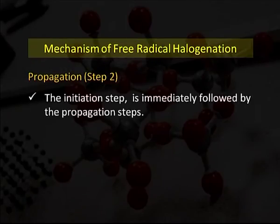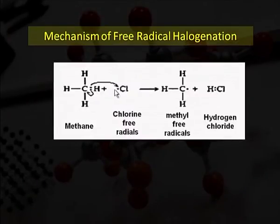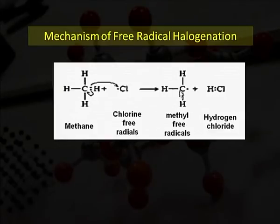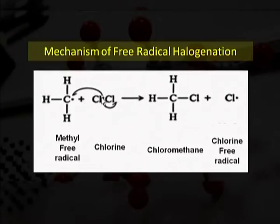Now we will discuss the propagation step, which is the second step. The initiation step is immediately followed by the propagation step. The chlorine free radical combines with a hydrogen free radical to form hydrogen chloride and a methyl free radical. This is called the propagation step — a step in which both a product and a reactive species that keeps the reaction going are formed. A second propagation step is also possible, in which a methyl free radical reacts with a chlorine molecule to form chloromethane and a chlorine free radical.